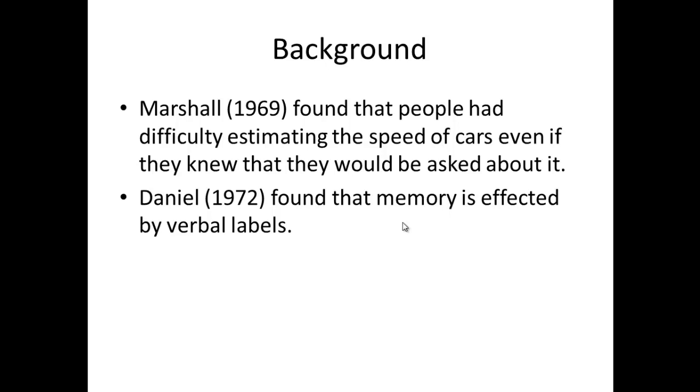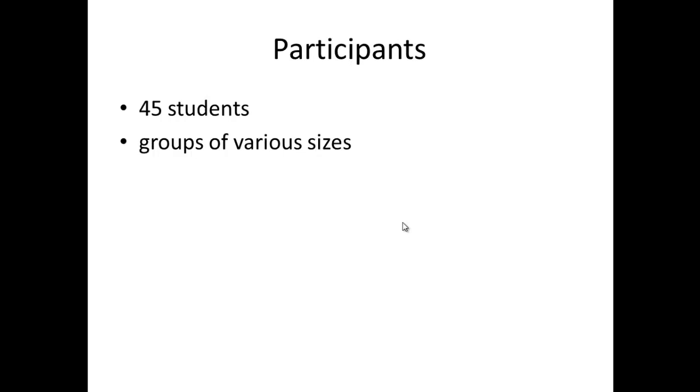What method did they follow? It was a laboratory experiment. So when you think about evaluation points, you should be thinking high levels of control, but ecological validity is likely to be low. It was an independent measures design, so participants only took part in one aspect of the independent variable. And who were those participants? There were actually two parts to Loftus and Palmer's experiment. In the first experiment, the participants were 45 students. When you think about the evaluation, you can probably think of a few points related to that. They were put into groups of various sizes to actually take part in the experiment.